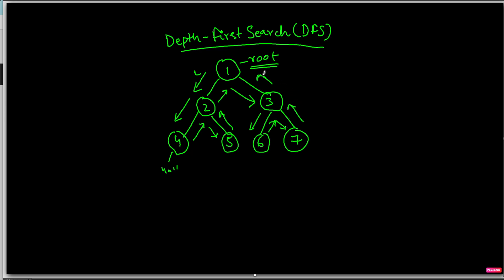Then come back and the traversal would be completed. So our traversal would be: one, two, four, five, three, six, seven.